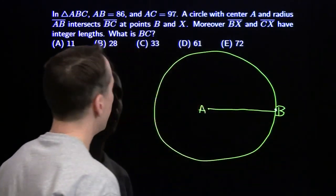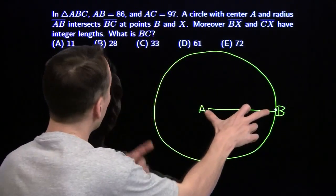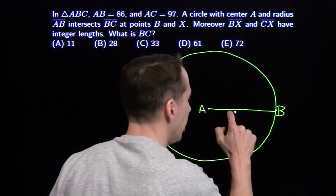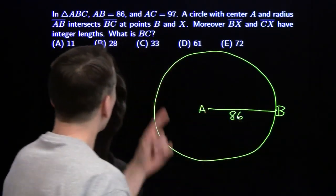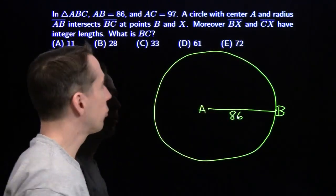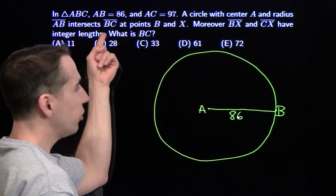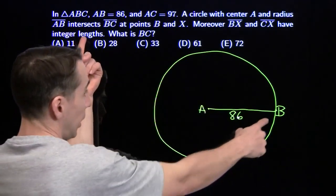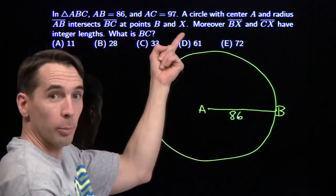And let's see, AC is 97, that's longer than AB, AB is 86, so C is going to be outside the circle, and then I see that BC is going to intersect the circle at B, of course, and then also at another point.